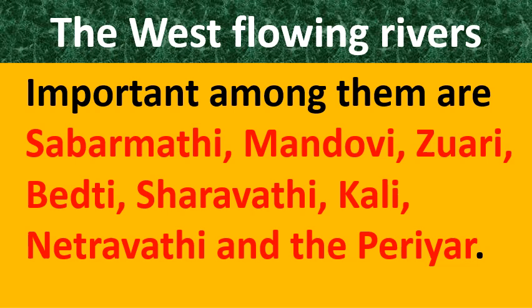Among the other important west-flowing rivers, some of the important ones are Sabarmati — it flows in Gujarat — Mandovi, Zuari, Bedti, Sharavati, Kali, Netravati, and Periyar. Sabarmati flows in Gujarat; Mandovi and Zuari are in Goa; Bedti, Sharavati, Kali, and Netravati are in Karnataka; and Periyar is in Kerala.